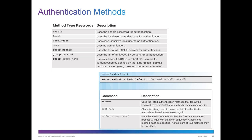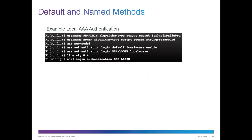You can do whichever option you want, and the fourth method can be set to none — though that's not the best way. So let's put this in action. If we are doing a local AAA, here we have two new users — junior admin and admin. We have a new model. We have AAA authentication login default local-case enable.